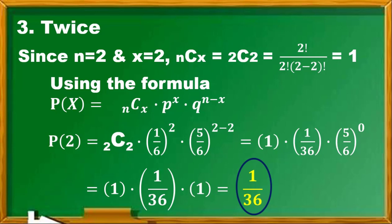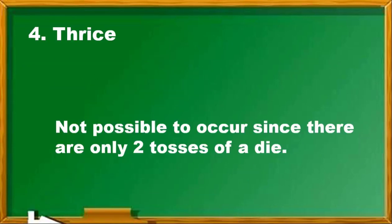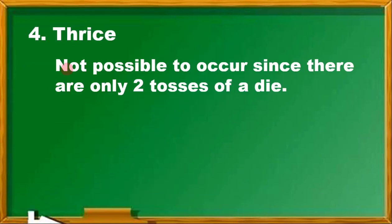For number 4, thrice: This is not possible to occur since there are only two tosses of a die. We cannot have a number 3 on a six-sided die occur 3 times. It should be the case that N is greater than or equal to X. In this case, N which is 2 is less than X which is 3.